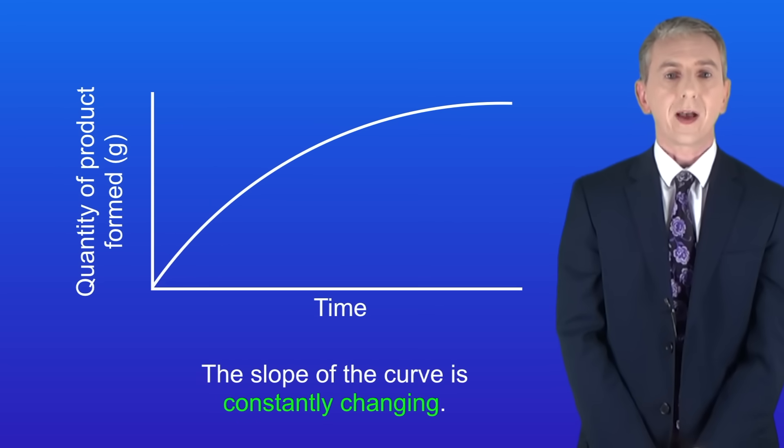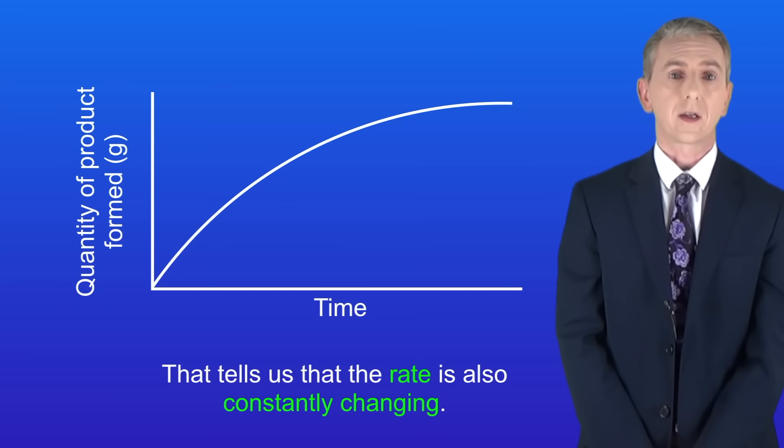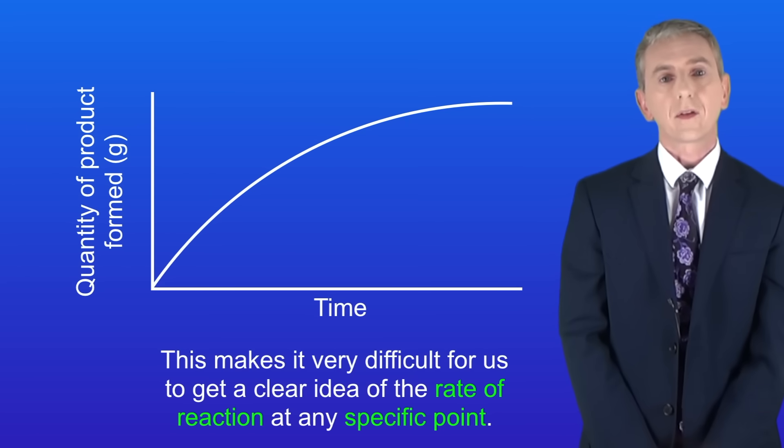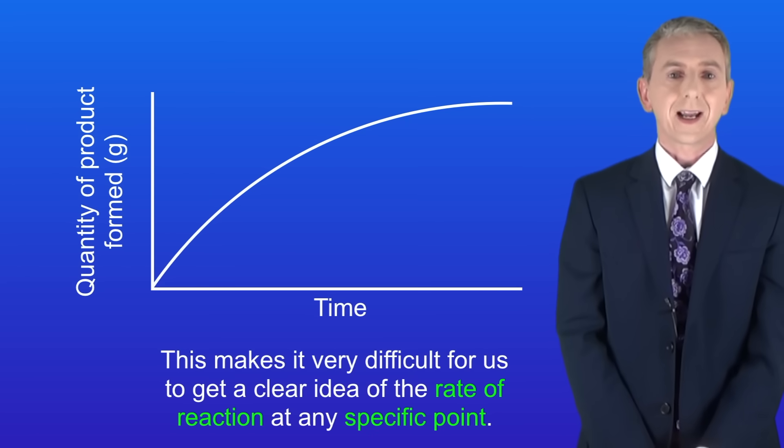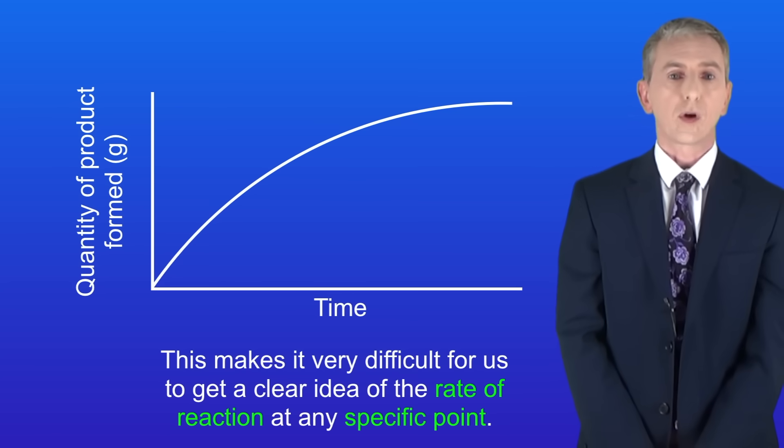Now there's a problem here and that is that the slope of the curve is constantly changing and that tells us that the rate is also constantly changing. This makes it very difficult for us to get a clear idea of the rate of reaction at any specific point. In this video we're going to look at how scientists solve this problem.